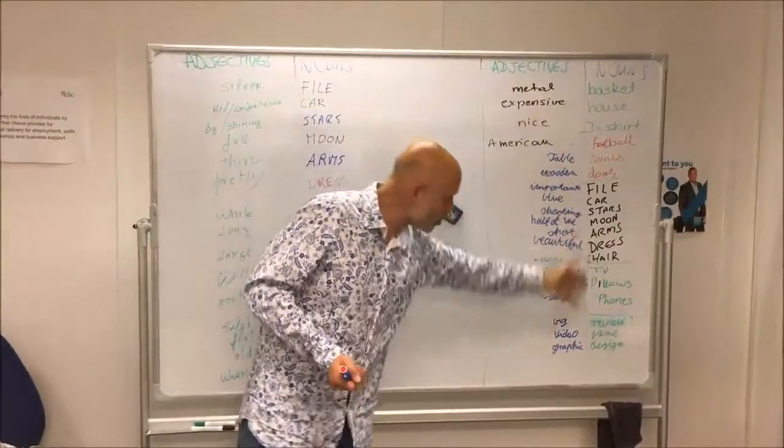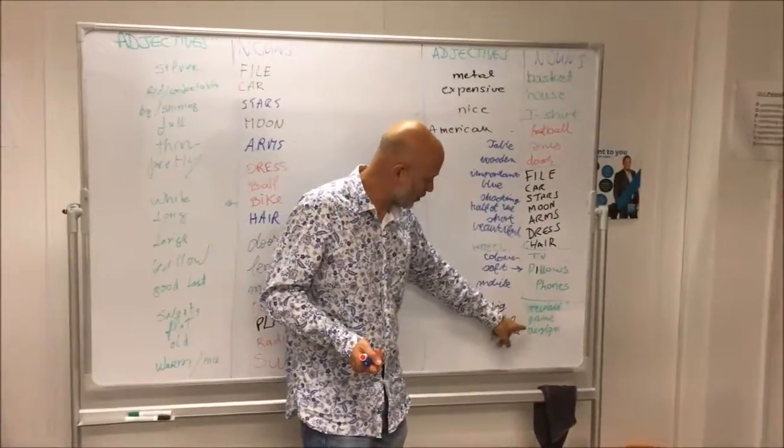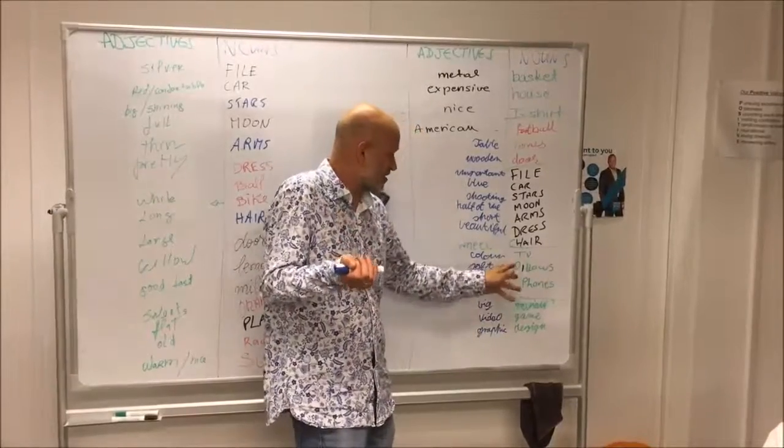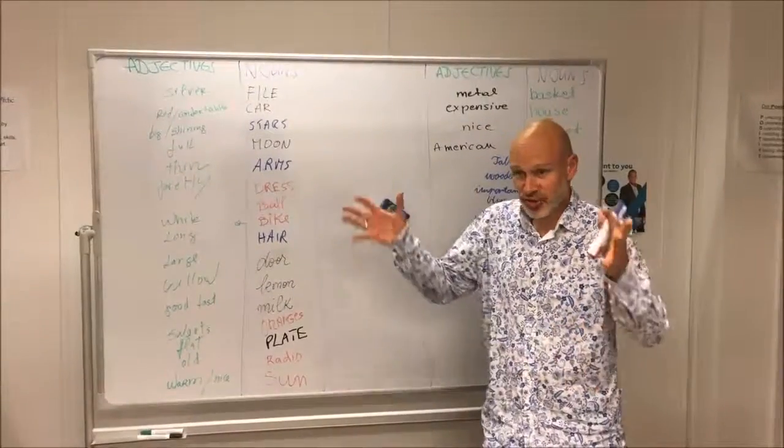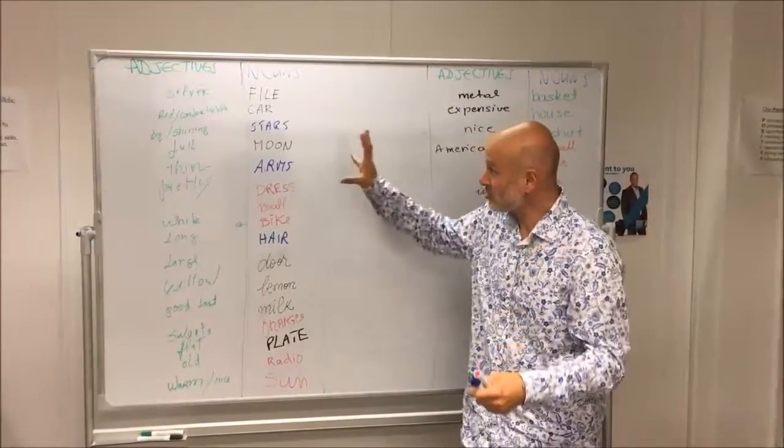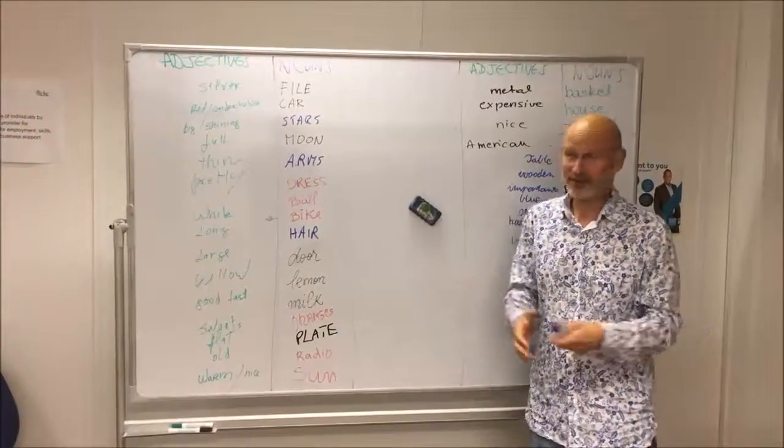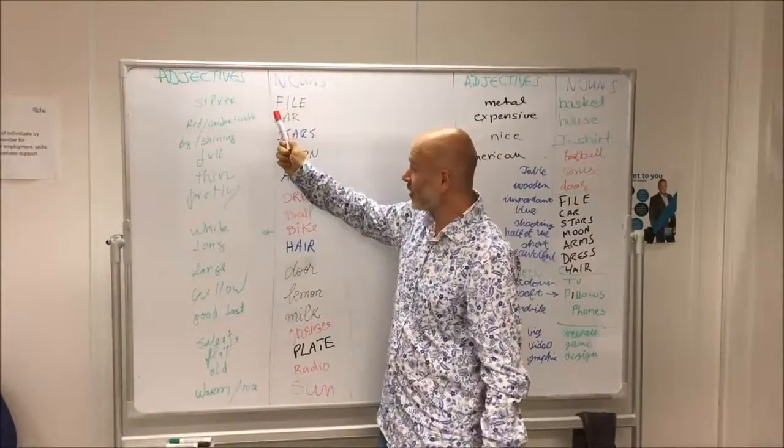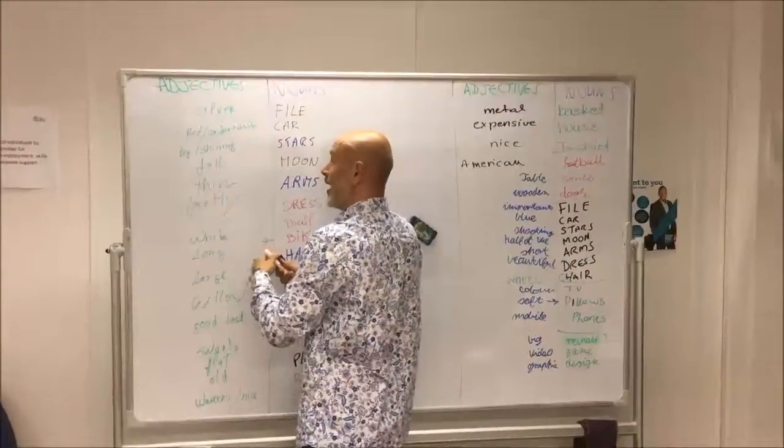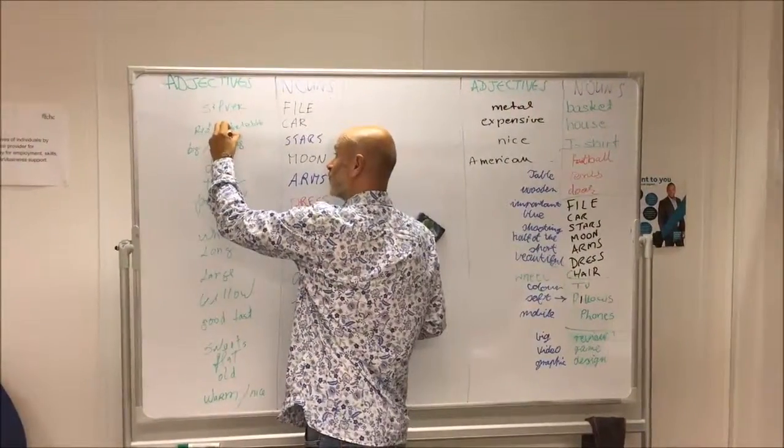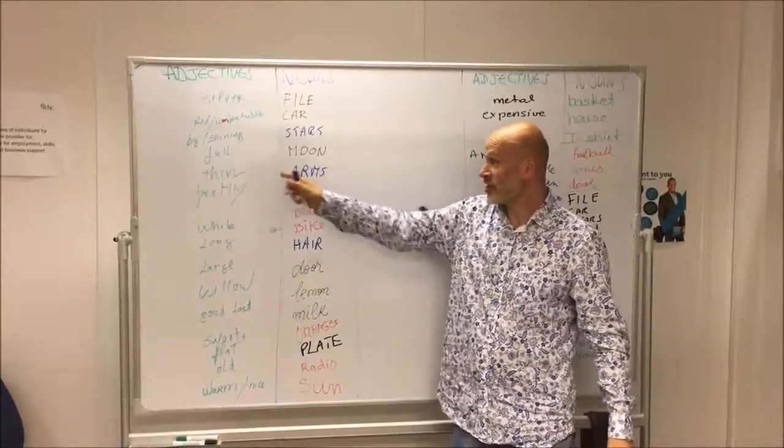So you wrote lots of nouns down here, and some really advanced ones like Bogomil wrote review, game, and design. There's things like pillows, lots of new words coming up. And then I asked you in very big groups to start thinking about adjectives. Look at the work you've done here: we've got silver file, comfortable car - now comfortable is spelled with an M - comfortable car, big stars, shining stars, full moon, thin arms.